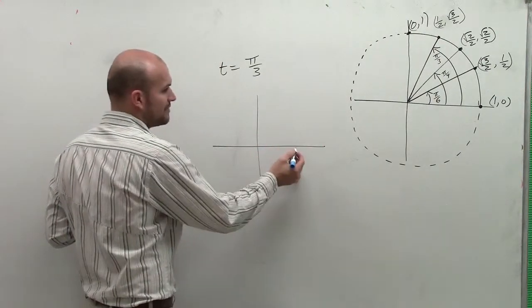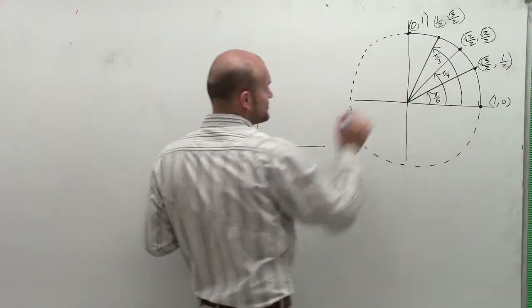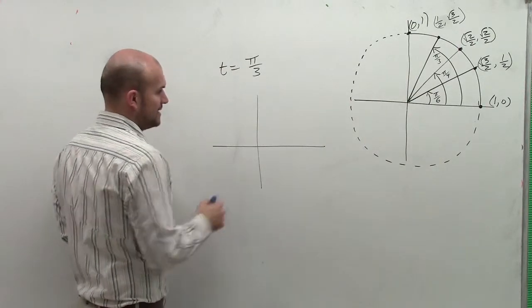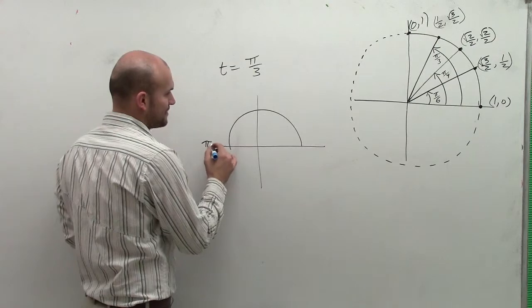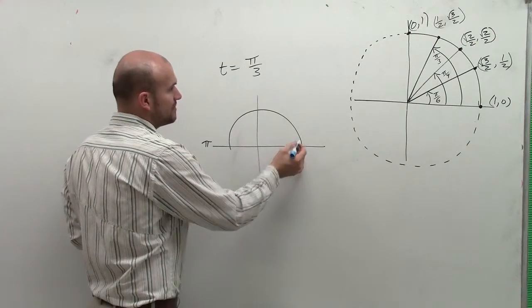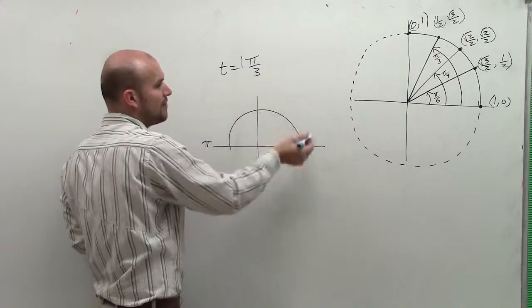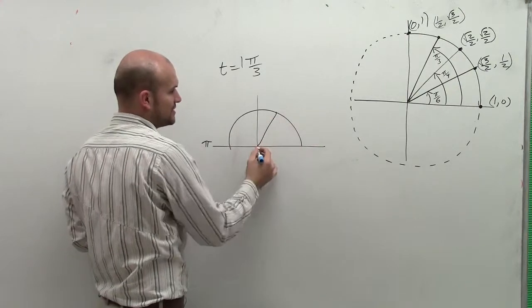You can see π over 3 right here. Think about it: if halfway around a circle is π, then π over 3 would be 1/3 of that, which is this point. If you think of 1/3, 2/3, 3/3, so 1/3 of that is going to be the angle right here.